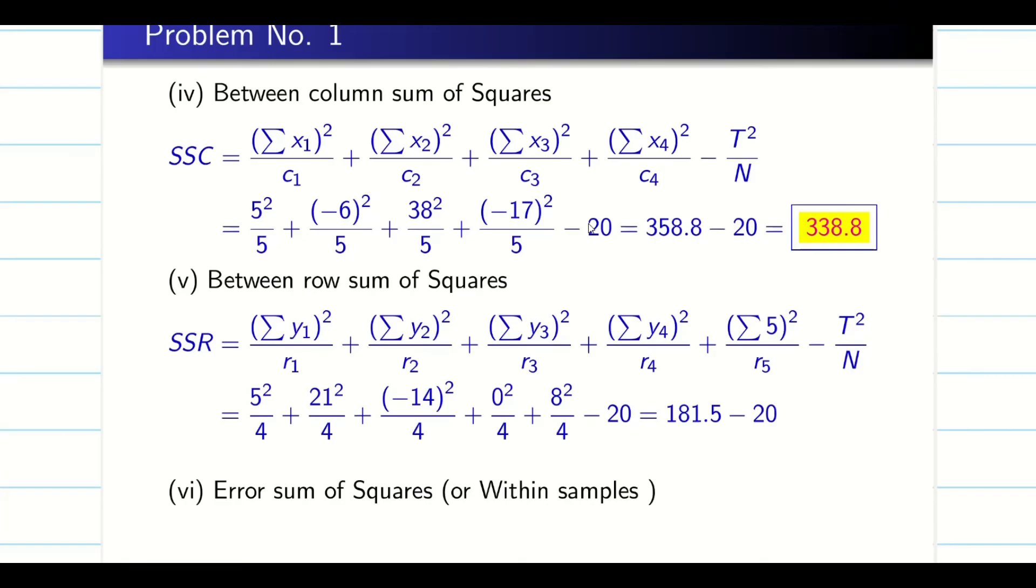The row sum is going to be summation y1. From the table you can take it again. All the rows are same, it is going to be 4. And finally error is going to be SSE. As I said, total is the bigger one, minus row and minus column. So I can find this value.